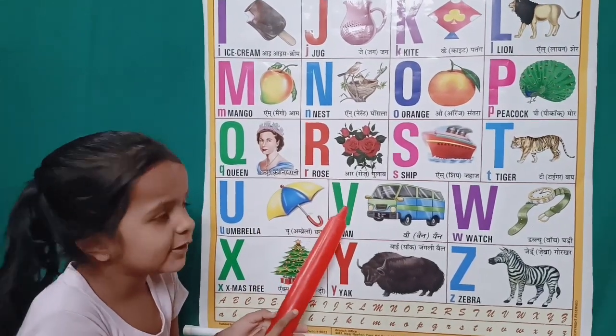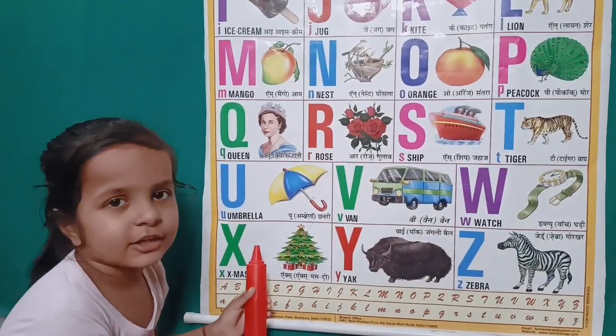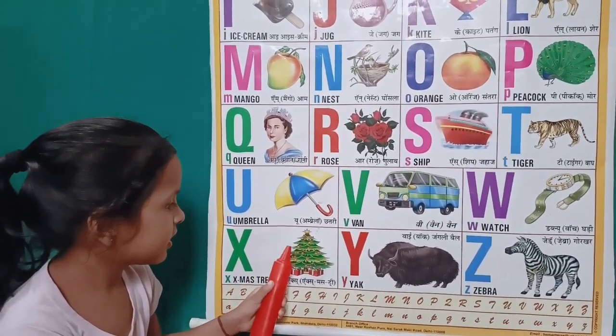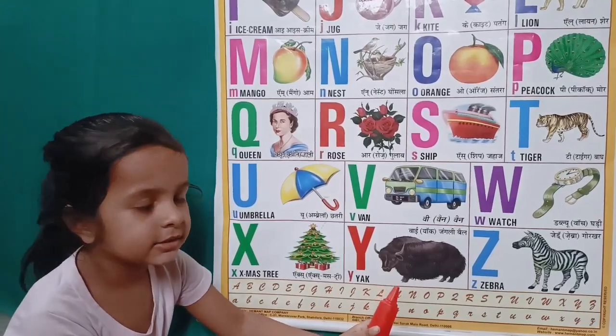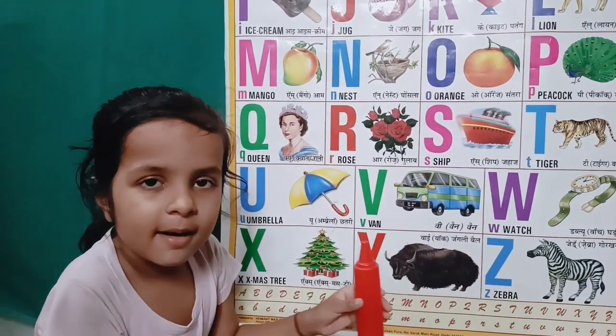umbrella, V for van, W for watch, X for xylophone, Y for yak, Z for zebra. If you liked it,